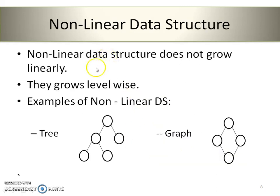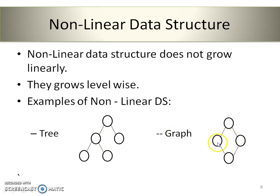What do we mean by non-linear data structures? As the name suggests, non-linear data structures do not grow linearly — they grow level-wise. The examples shown here are tree, where different nodes are at different levels, and graph, where connected nodes are also at different levels. We can't say these data structures grow linearly because they are non-linear, growing level-wise. That's why they are classified as non-linear data structures.